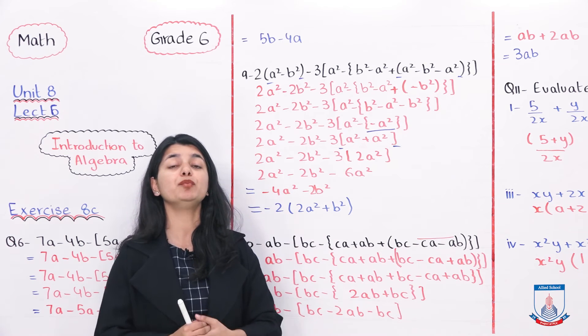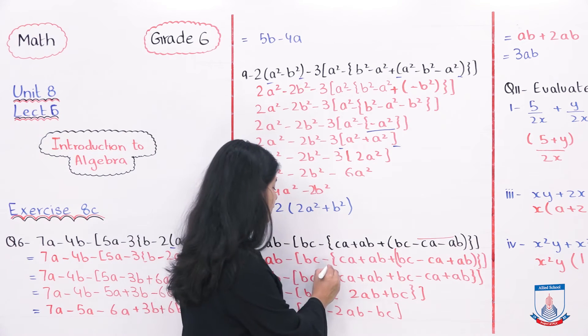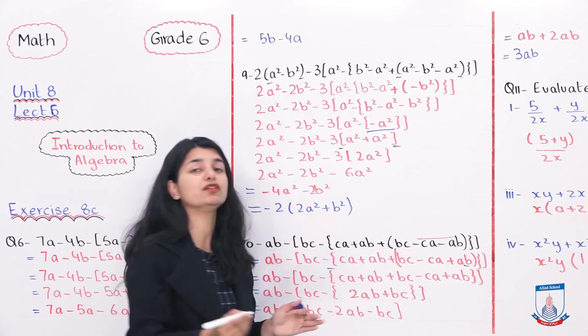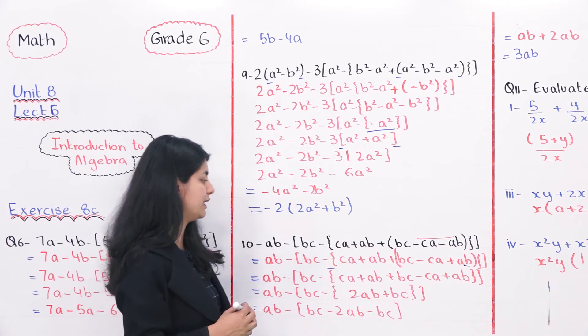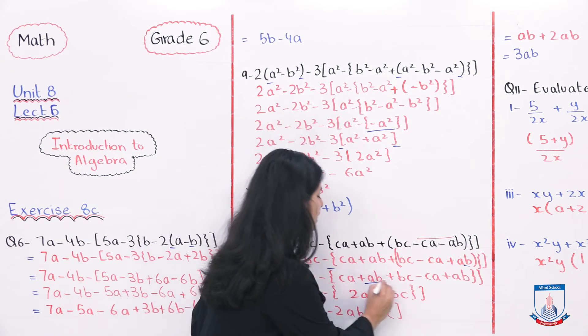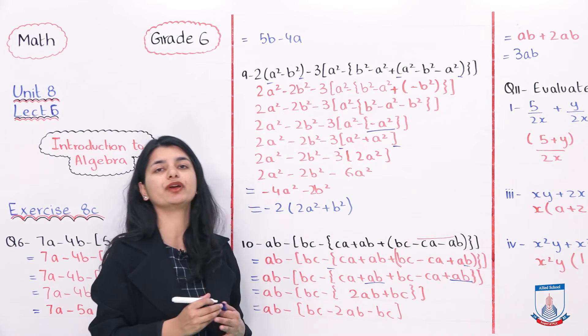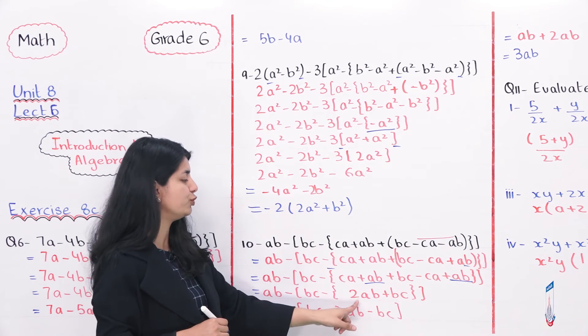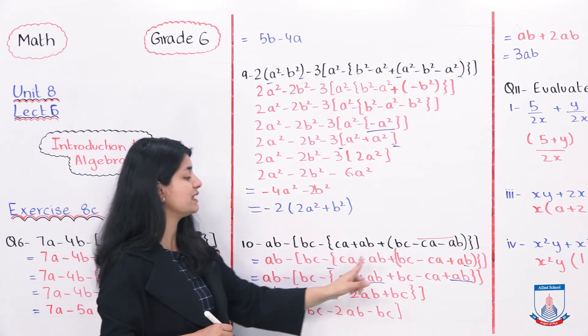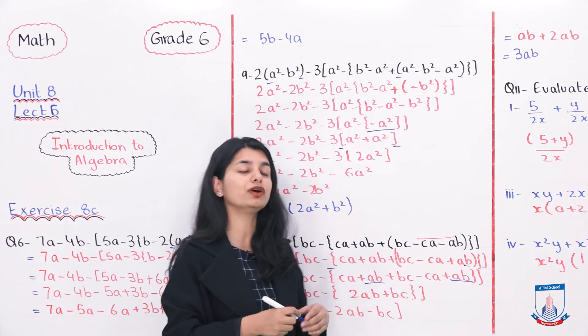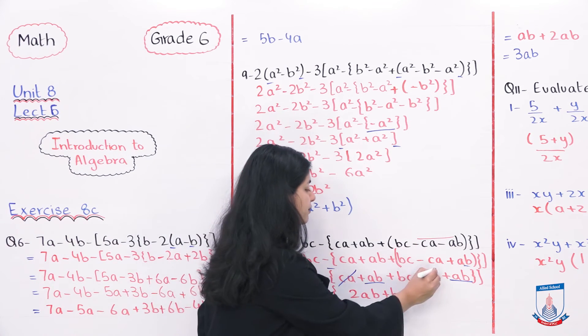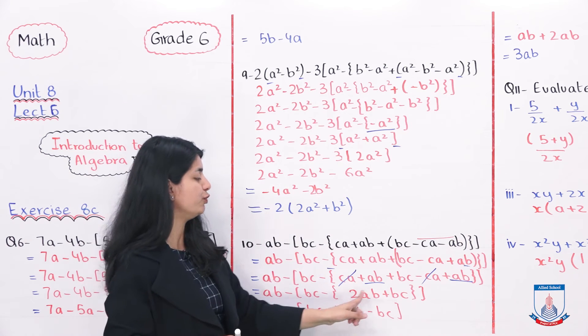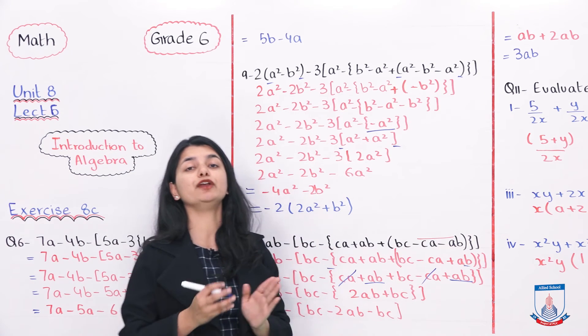Uske baad ab humne apne braces ko open karna hai, which are these ones. For that, phir that pehle toh iske andar jo kuch hai, usko aap align karna hai. Iske andar, AB, aur AB, AB aapas mein add hoke, 2AB bana sakte hain. To, aap isko 2AB likhta hai. Phir, aap dekhye, CA minus CA, dono cut kar, 0 ban jaate hain. To, aapke paas reha jata hai, 2AB plus BC inside your braces.